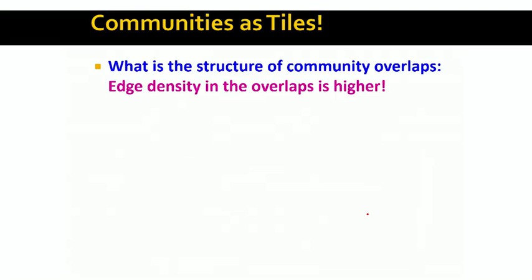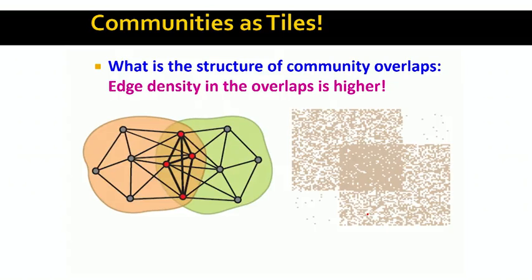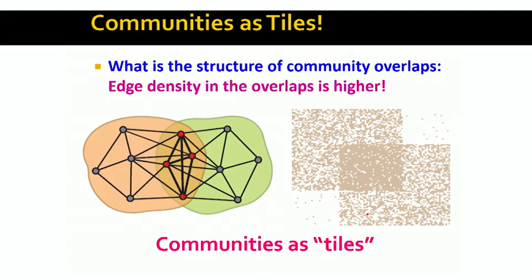The question is: how should we think about communities in networks, or how should we think about how different groups overlap? The insight we will be using is that when two groups overlap, people who belong to multiple groups are more likely to be friends with each other. So in some sense we will think of these communities as tiles. Here is a small hypothetical example of how two groups could overlap, and the red nodes that are in the overlap of the two groups are more likely, or more strongly, connected with each other.